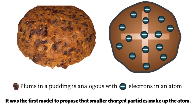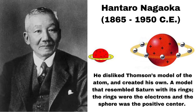In 1911, another scientist who worked in Thomson's lab improved on his atomic model. Hantaro Nagaoka, a Japanese physicist, disliked Thomson's model of the atom and created his own — a model that resembled Saturn with its rings. The rings were the electrons and the sphere was the positive center. Hantaro's model was not accurate, and it was left to Bohr and Rutherford to fix that.